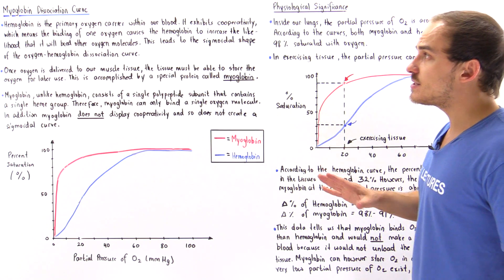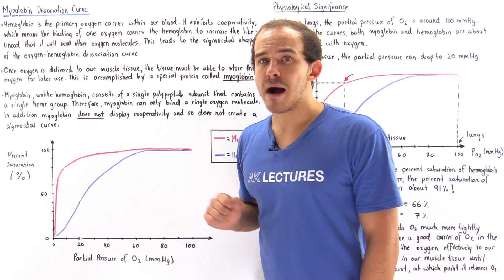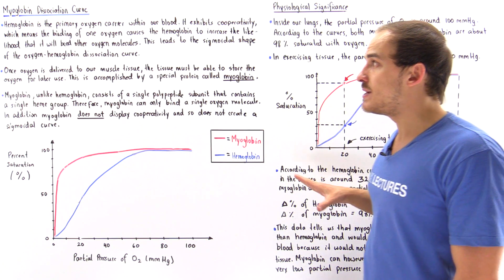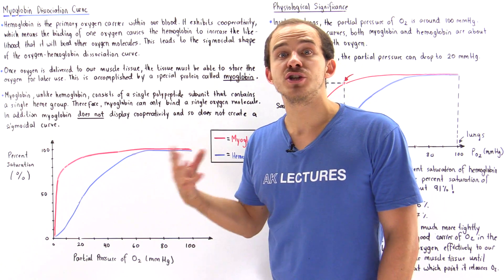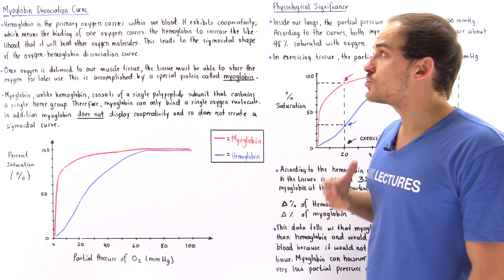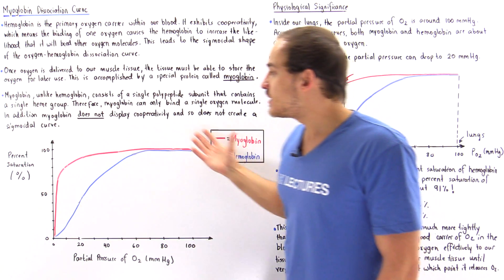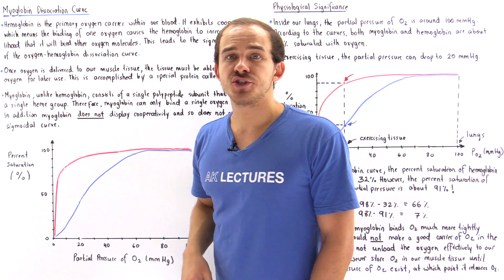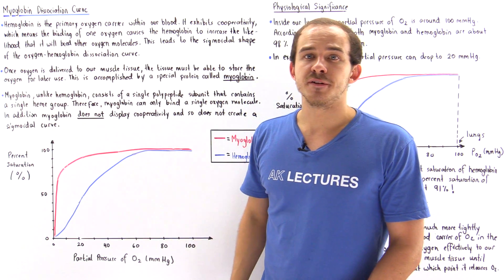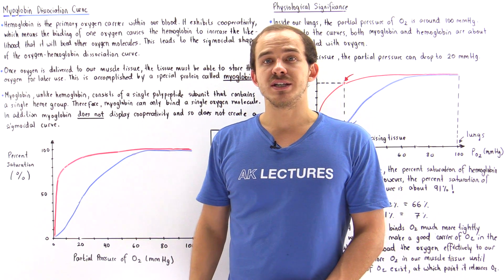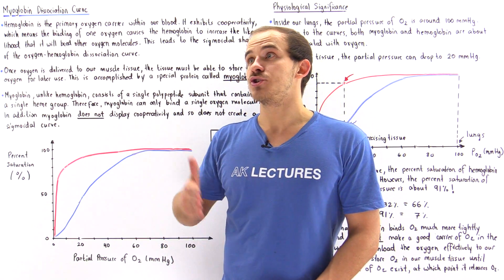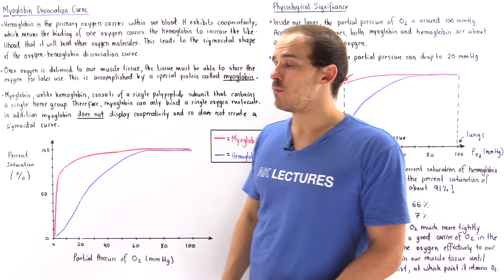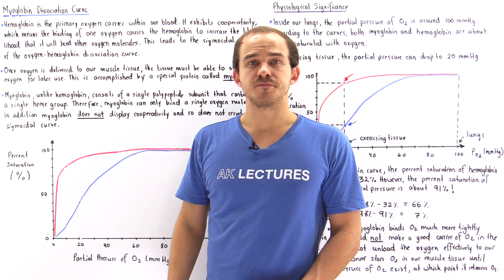Myoglobin has a very high affinity for oxygen — much more than hemoglobin — and it only unloads that oxygen when the partial pressure inside our tissue drops to an extremely low quantity, below 2 millimeters of mercury. This is the major difference between myoglobin and hemoglobin, and their difference in functionality can be explained by these two different oxygen-hemoglobin and oxygen-myoglobin dissociation curves.